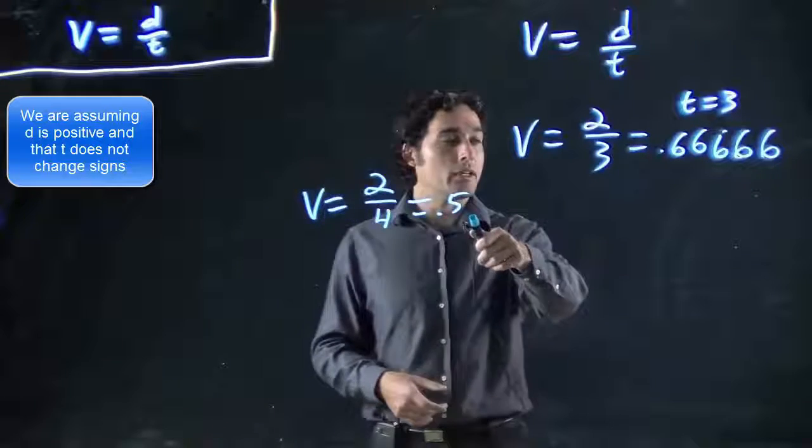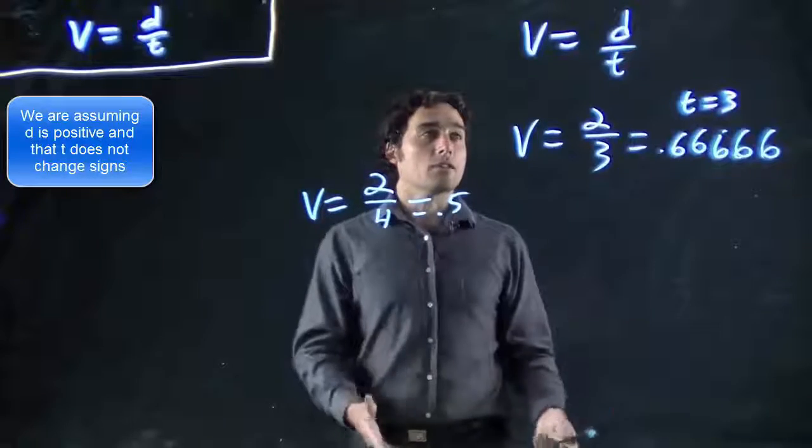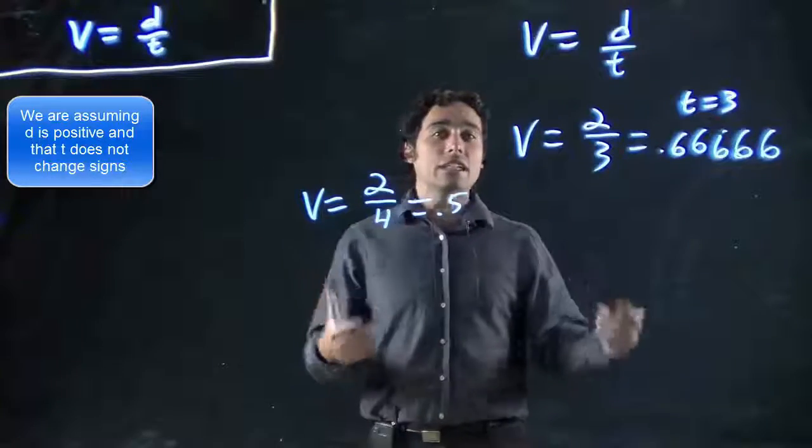Okay, look at this. 0.5 is smaller than 0.66666 forever. So v got smaller. I increased t, and v got smaller.